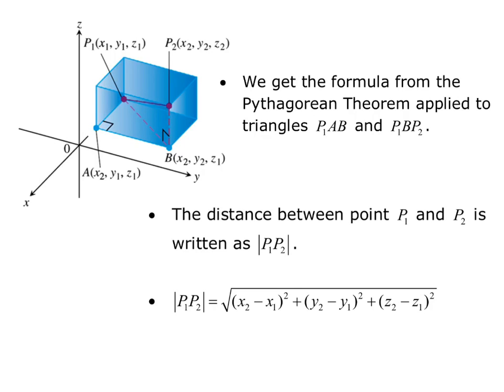The distance between points P1 and P2 is written as |P1P2| — it looks like absolute value, but in this case it denotes the length between P1 and P2. The length of the line segment P1P2, or the distance between P1 and P2, equals the square root of (X2 − X1)² + (Y2 − Y1)² + (Z2 − Z1)².